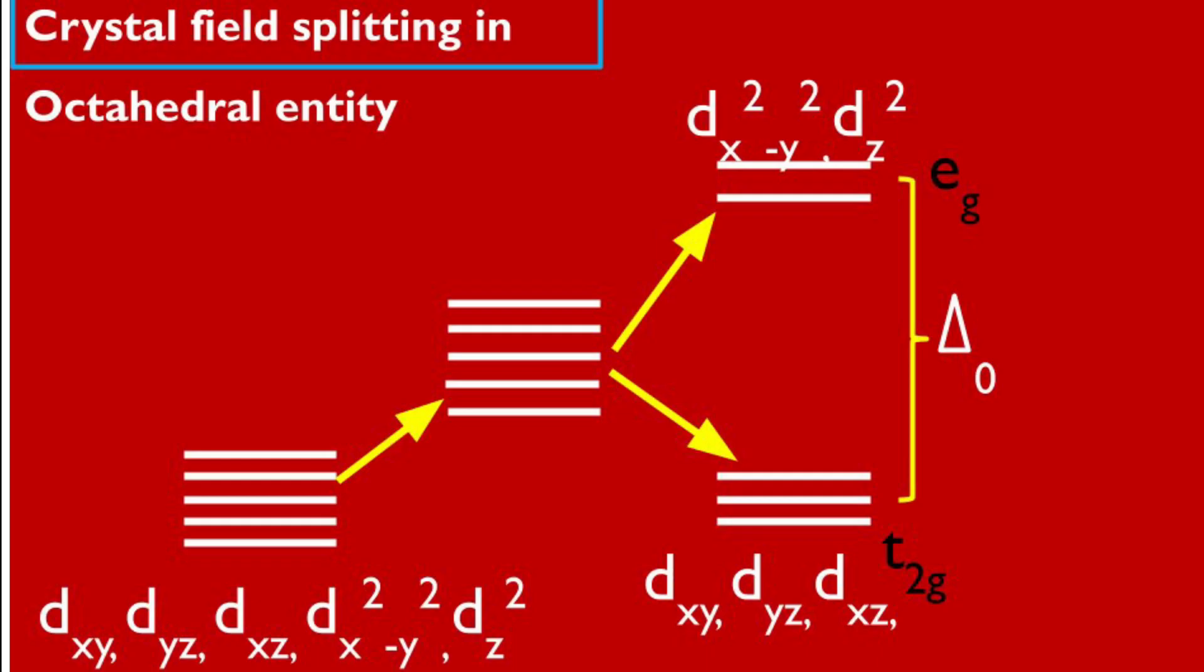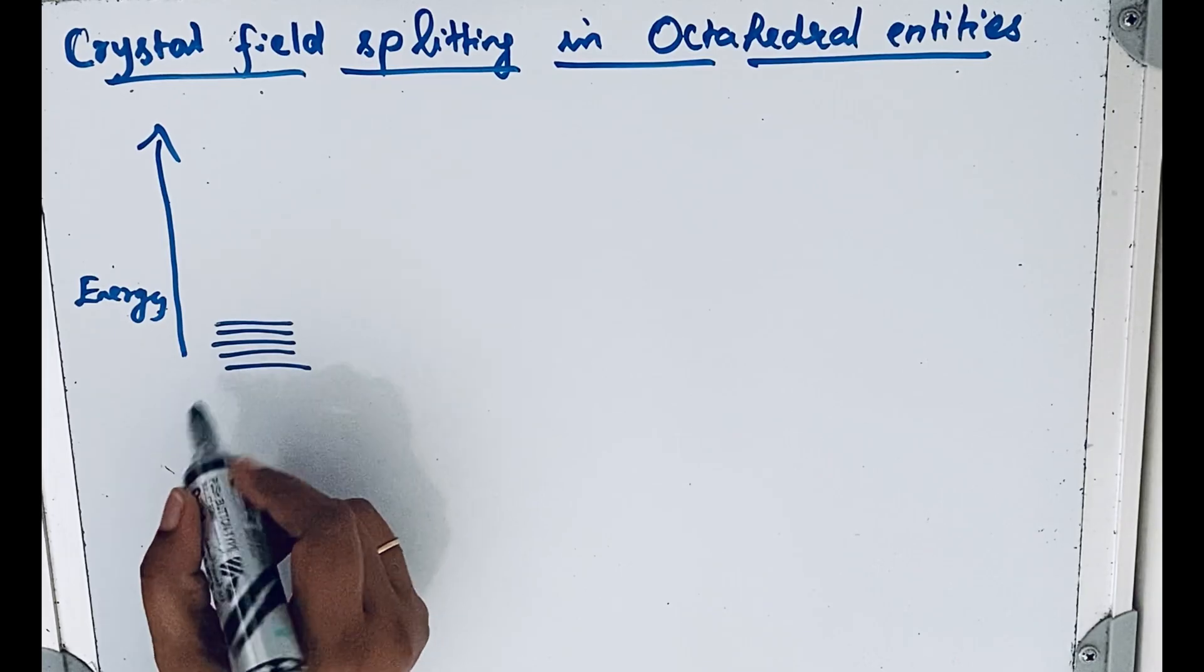Welcome to Aurora Chemistry for Everyone. In this video, we will analyze crystal field splitting in octahedral coordination entities. There are five d orbitals.